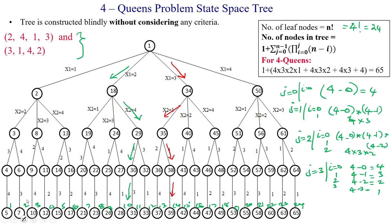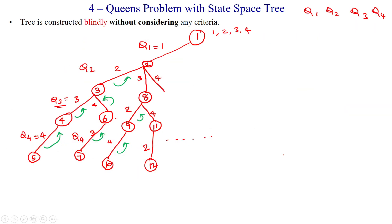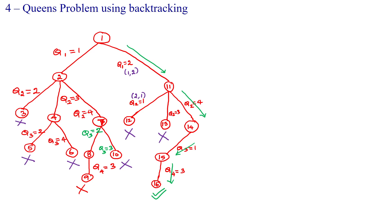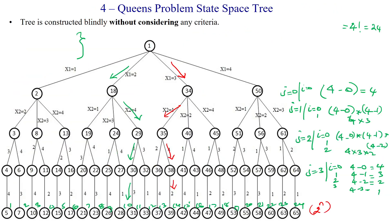This is the way to construct the tree blindly, which takes time of order 2 power n — so it takes much more time. But when using the criteria-based checking, within 16 nodes we can find the solution where queen 1 is in column 2, queen 2 in column 4, queen 3 in column 1, and queen 4 in column 3. Blind construction requires 65 nodes while criteria-based checking requires only 16 nodes, so criteria-based checking takes much less time. Thanks for watching.